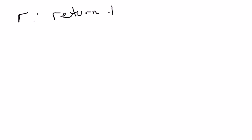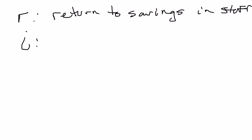The basic idea is that the real interest rate, which I'm going to abbreviate as R, is the return to savings in terms of stuff — whatever stuff might be. And the nominal interest rate, I, is the return to savings measured in dollars. So that's the distinction I want you to get from this short little video.